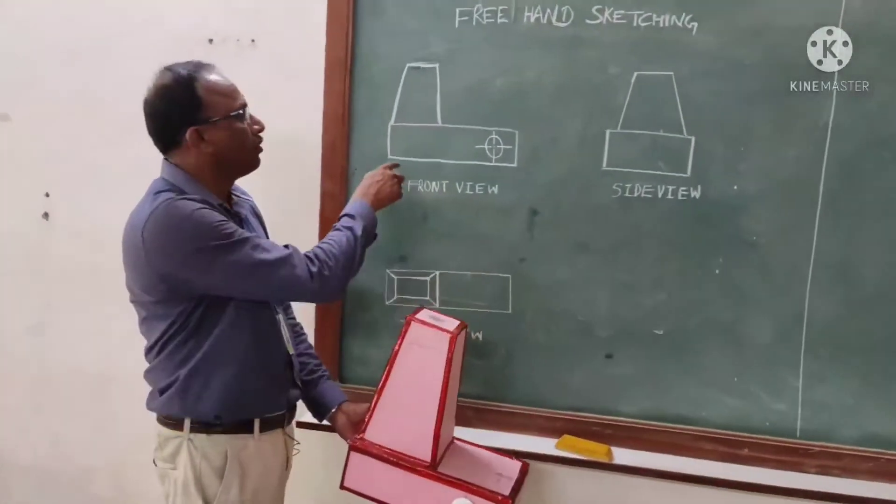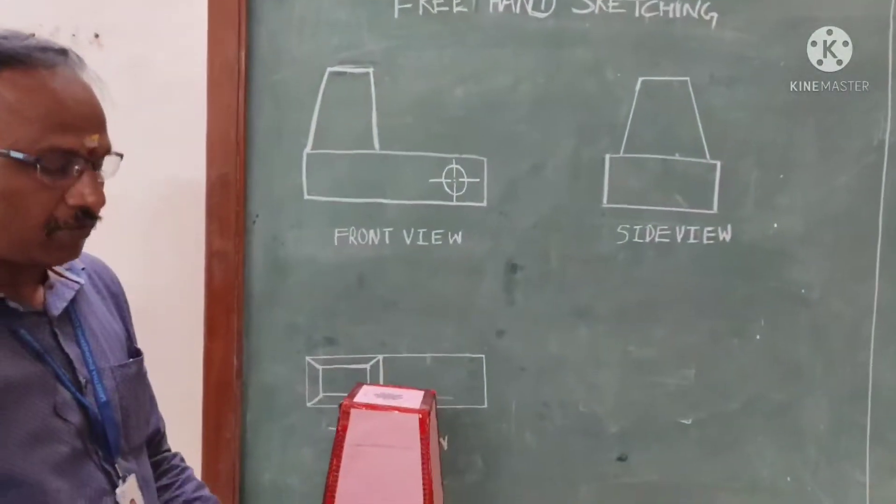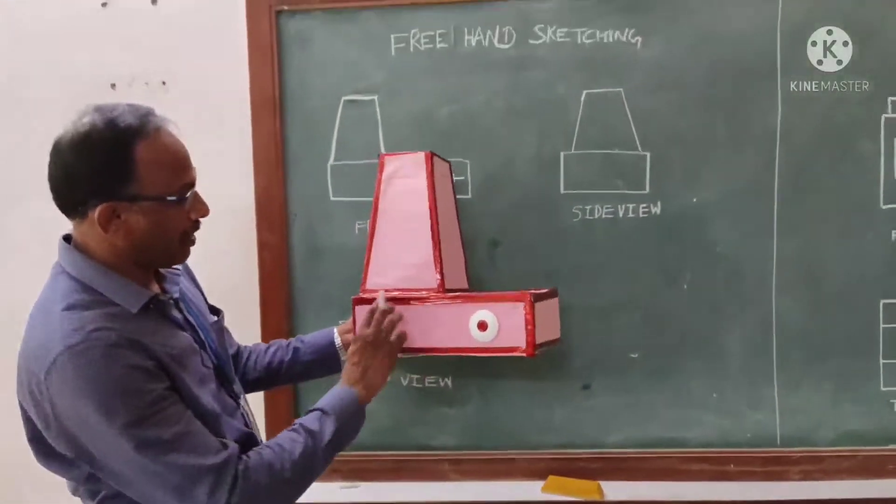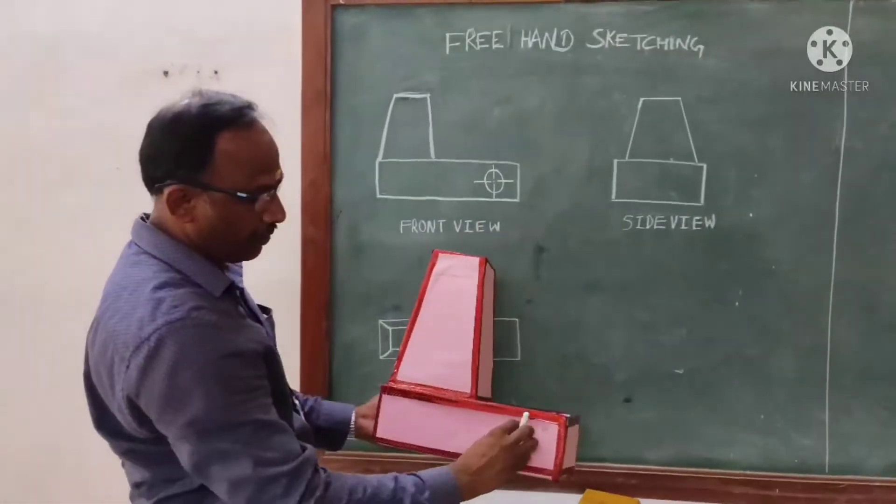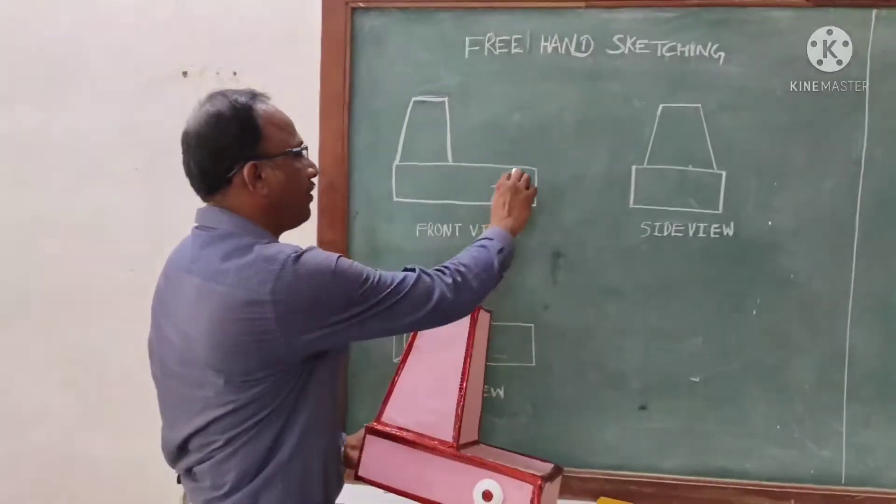Now, coming to the front view. This is our front view. We can have this bottom rectangle. We need to draw that. Then we have some regulator control. We will draw like this.